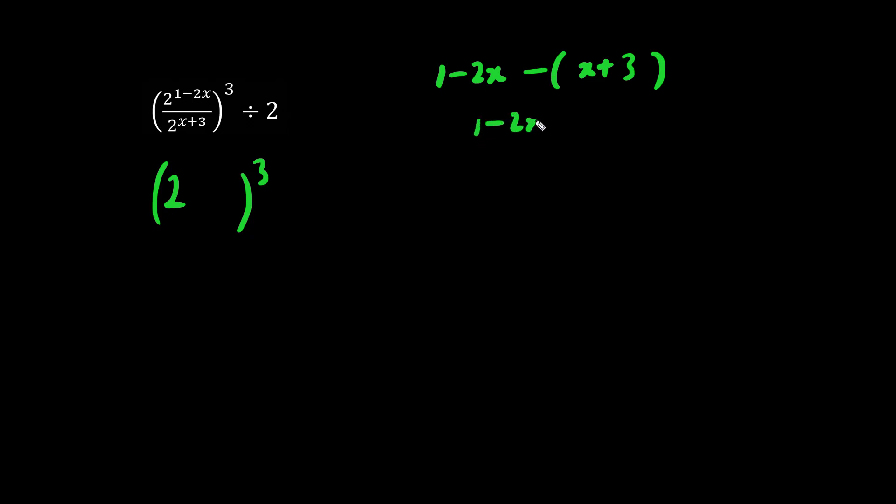We have 1 minus 2x, and we're going to distribute this negative 1 here and here. So we have negative x minus 3. Negative 2x minus x is minus 3x, and 1 minus 3 is minus 2. So this here is a result of the exponents being subtracted. We have 2 to the minus 3x minus 2.